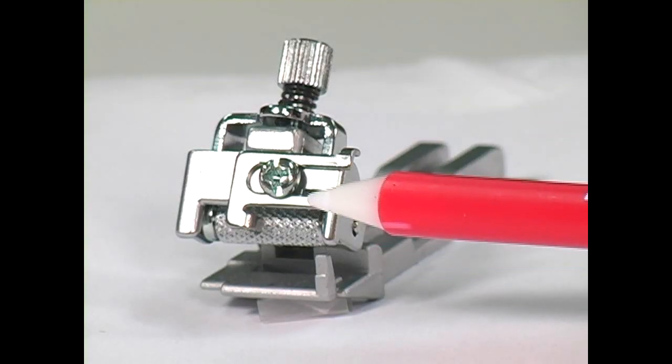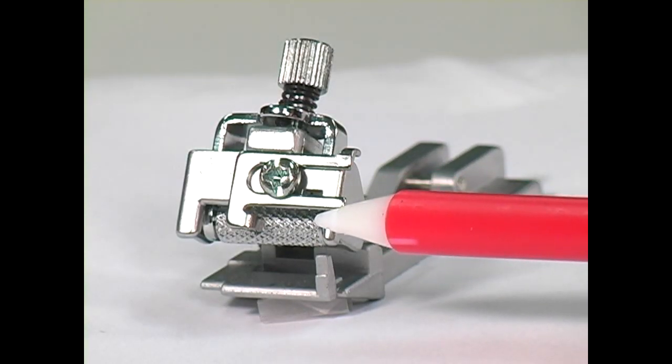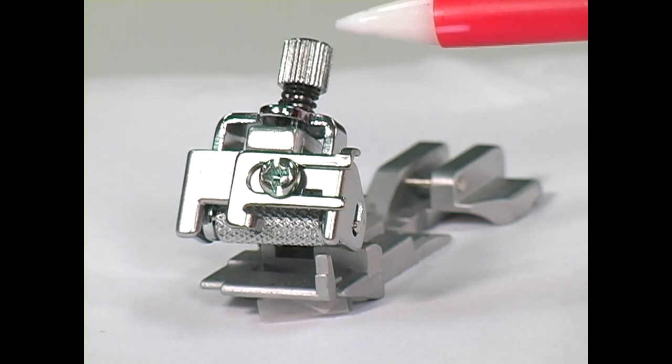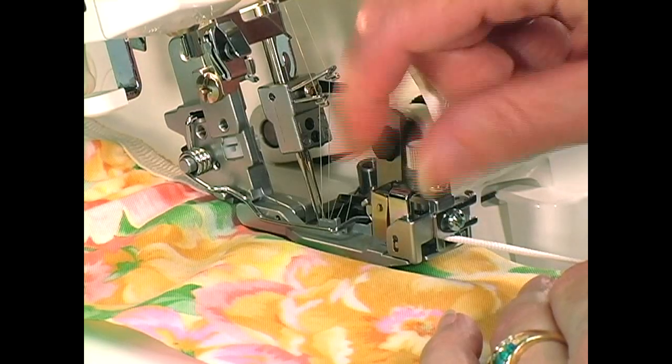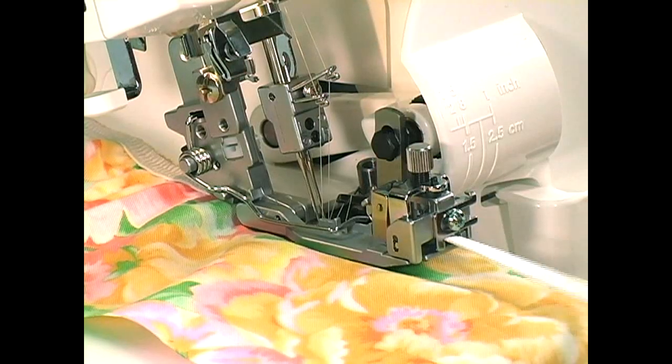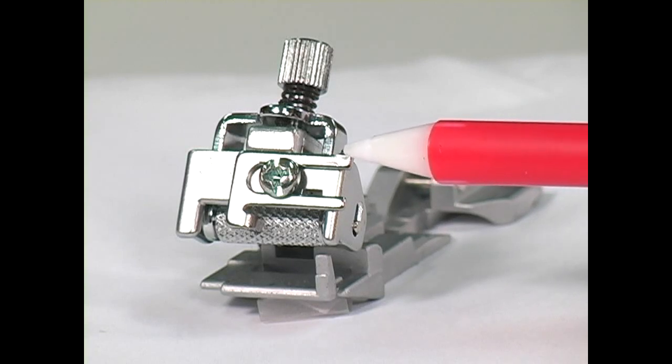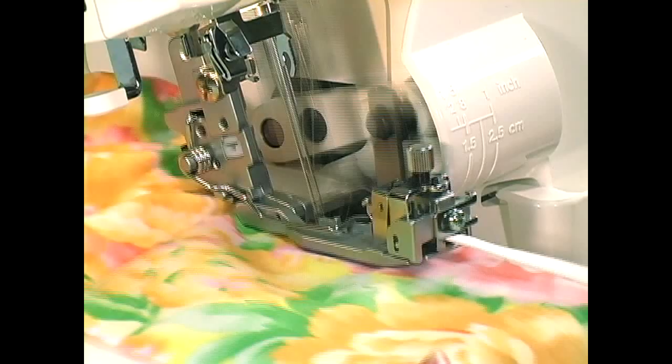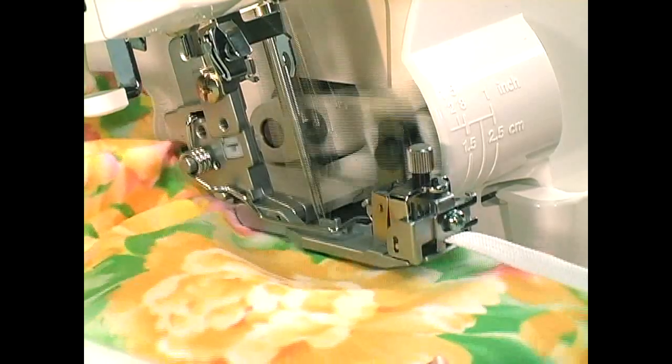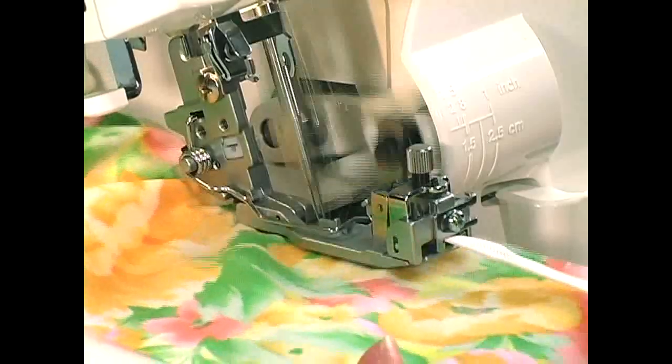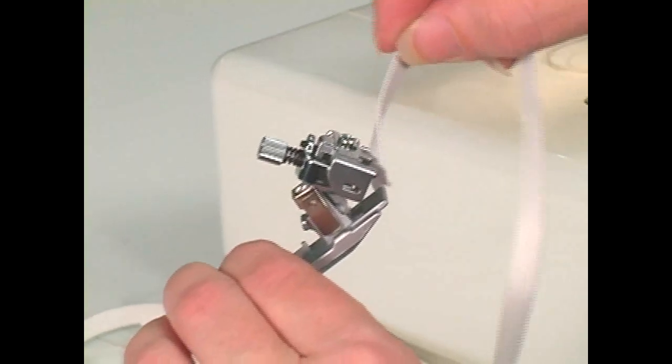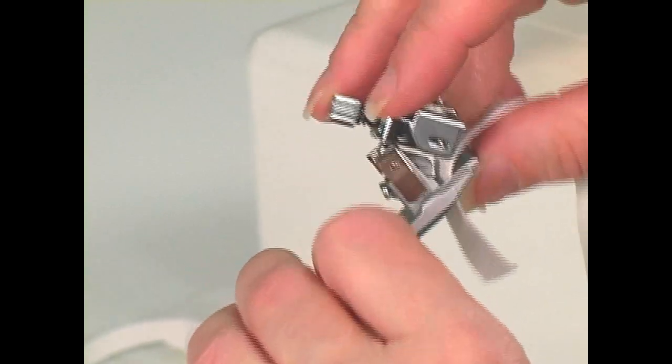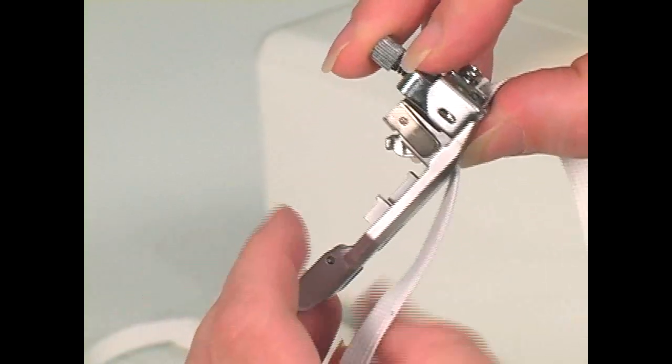The roller applies constant tension on the elastic as it serged into the seam. The pressure screw on the top of the hinged section regulates the amount of stretch. Increase the pressure to increase the amount of stretch. Adjust the guide on the front of the hinged section by loosening the set screw and moving the guide from right to left. A 3 or 4 thread overlock stitch may be used to secure the elastic in place. Use a firm elastic wider than the stitch being used. Lengthen your stitch length to 4 to keep stitches from overlapping when the serged elastic relaxes into shape.